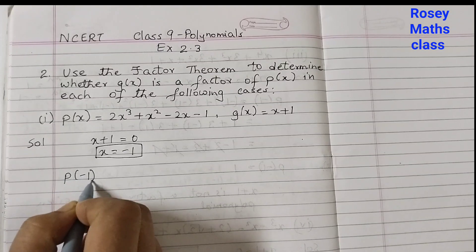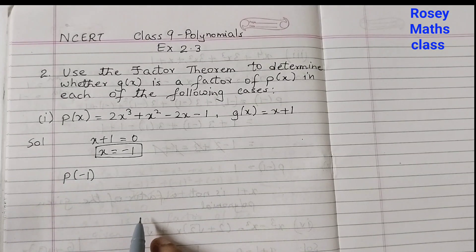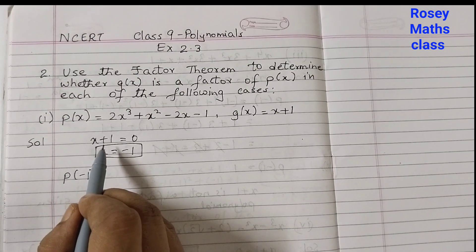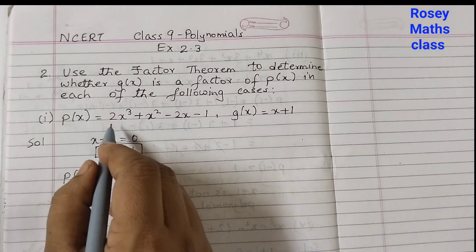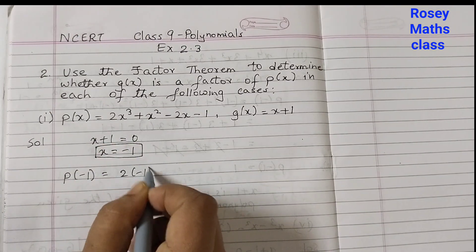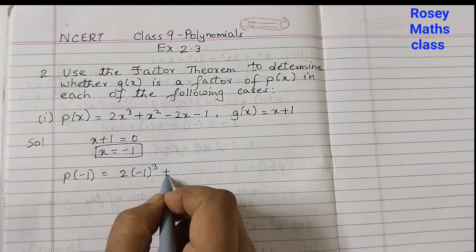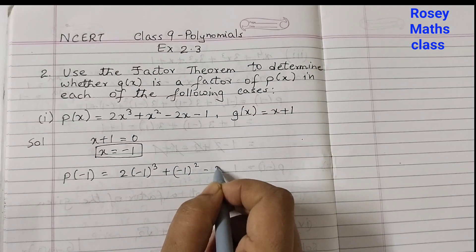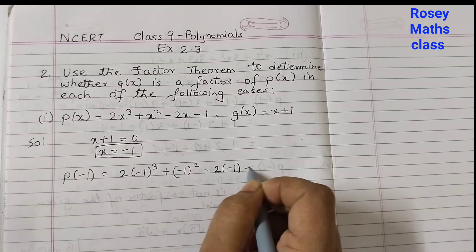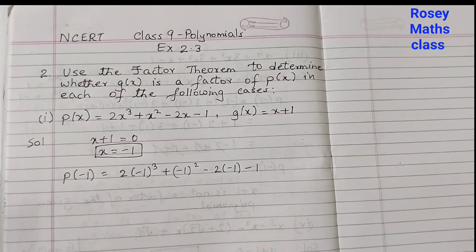Now this value of x we are going to substitute. We will find p(−1), and after solving this, if you get 0 at the end, that would mean that x + 1 is a factor. So let's substitute: 2(−1)³ + (−1)² − 2(−1) − 1.